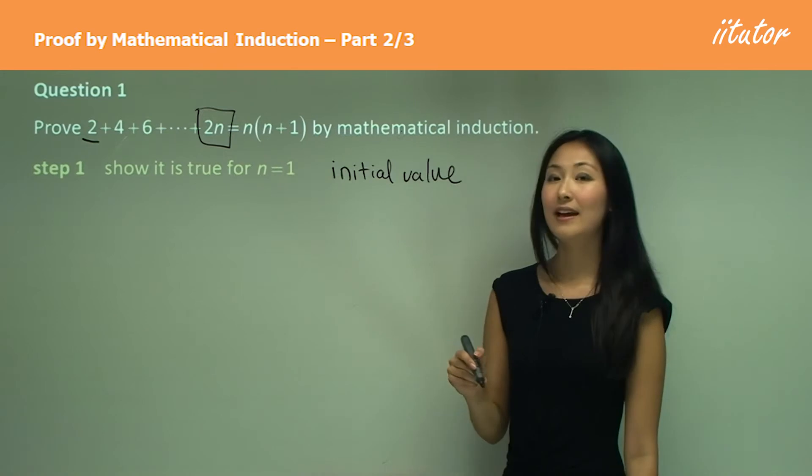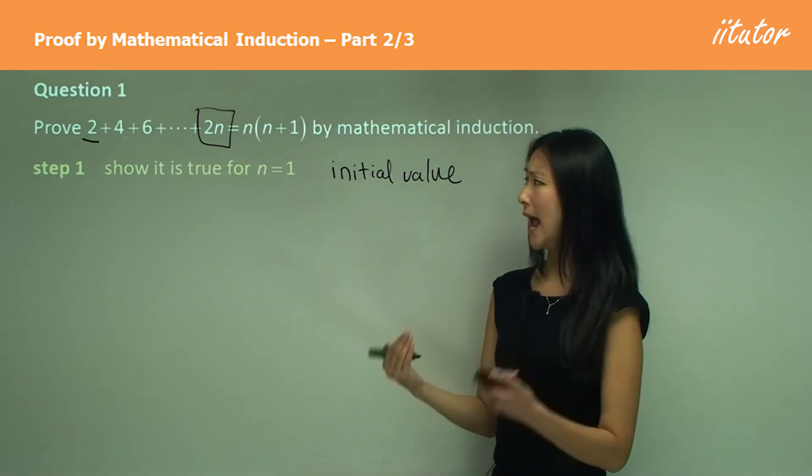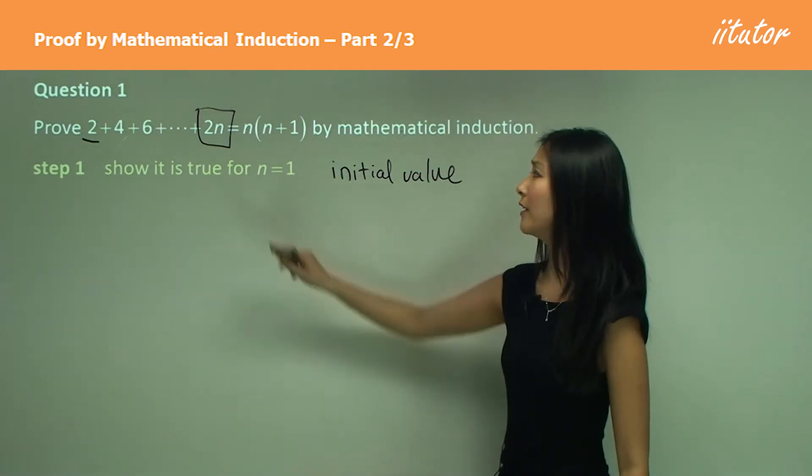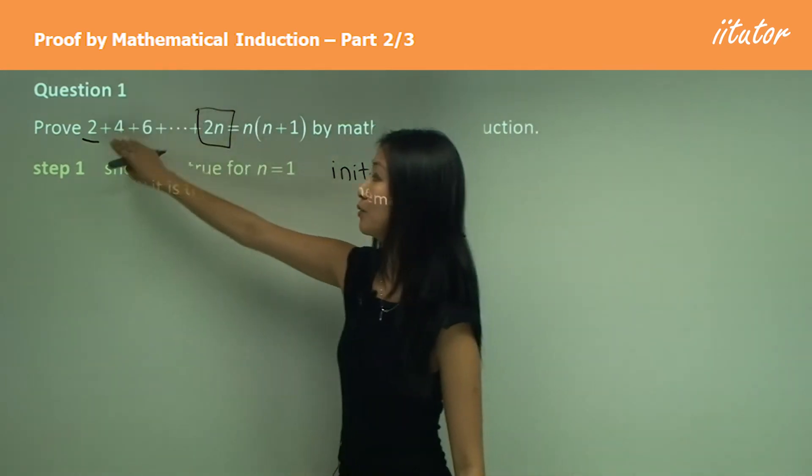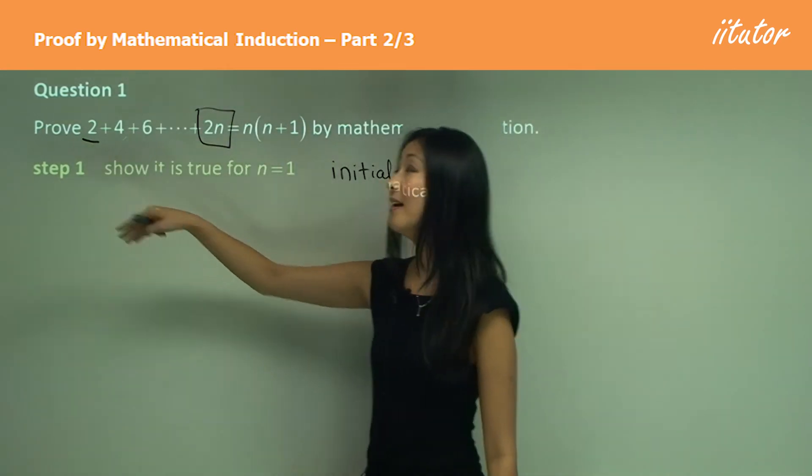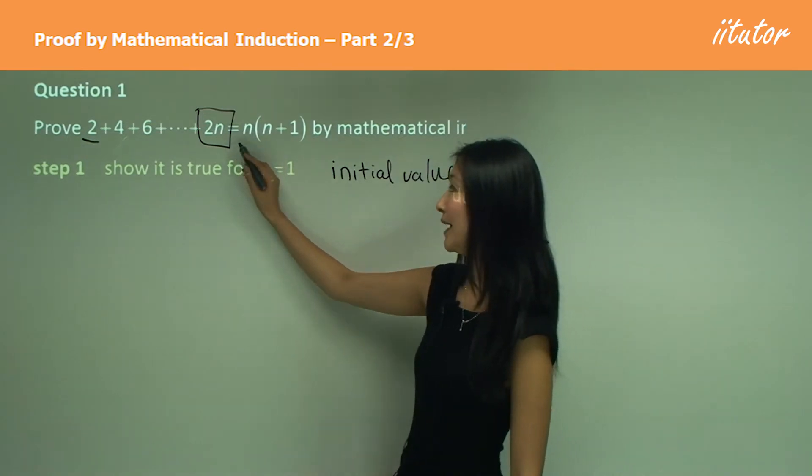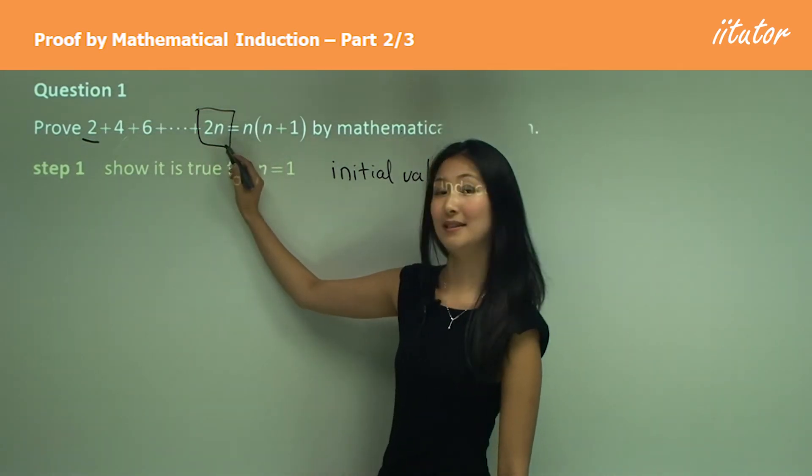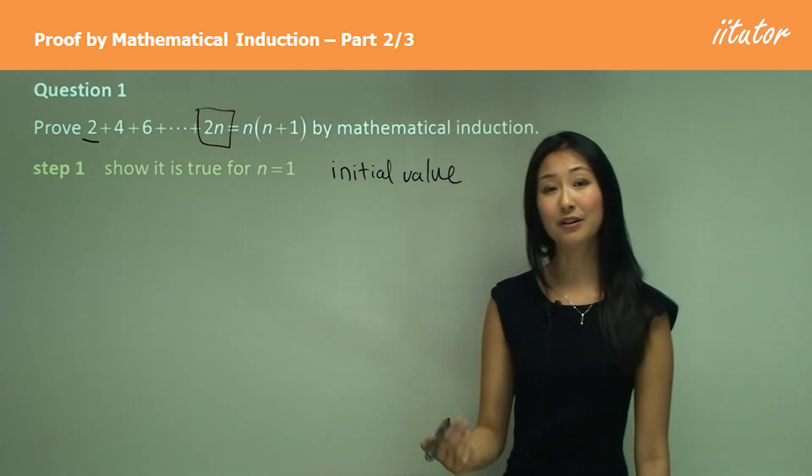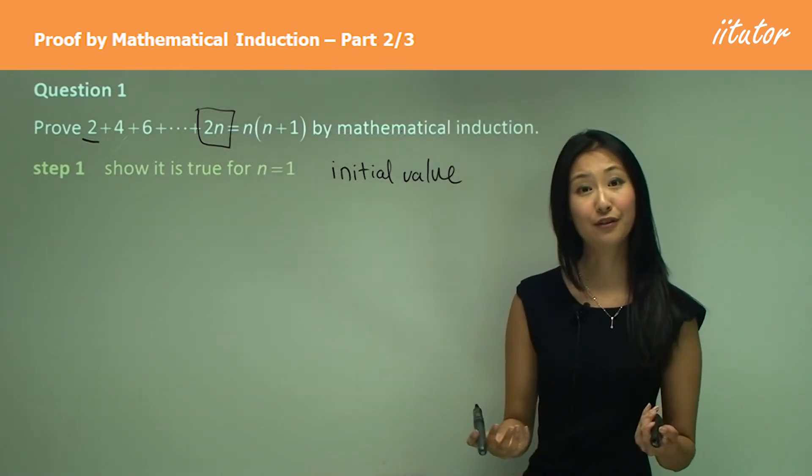Then we think, well what does n have to be for the general formula to equal the first value? You can see that n has to be 1. For 2n to equal 2, n must equal 1. So that's the first value of n that we have to prove.